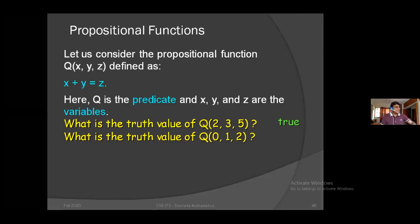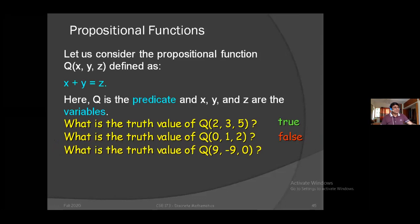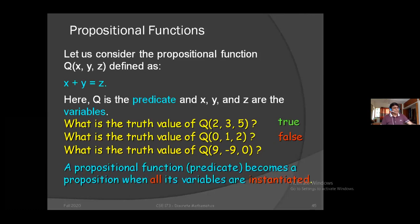We have to evaluate Q(0, 1, 2): zero plus one equals one, which does not equal two, so it is false. For Q(2, 3, 5): two plus three equals five, so it is true. A propositional function — our predicate — becomes a proposition, and that proposition is either true or false.